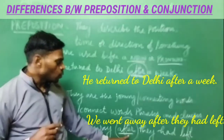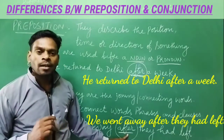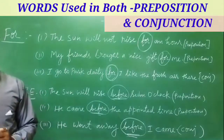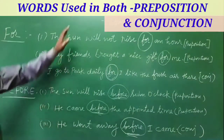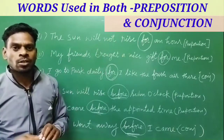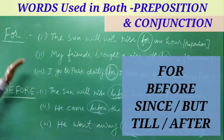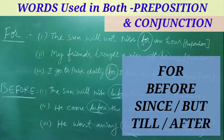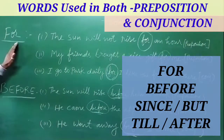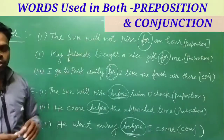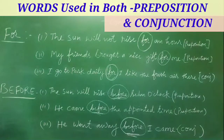Now let's see some of the words that are used in both preposition and conjunction. Those words are: for, before, since, till, and so on. Let's deal with 'for' first. It is used for both prepositions and conjunctions.